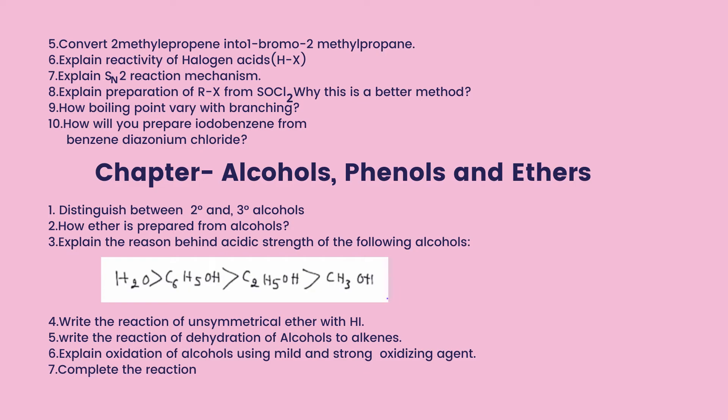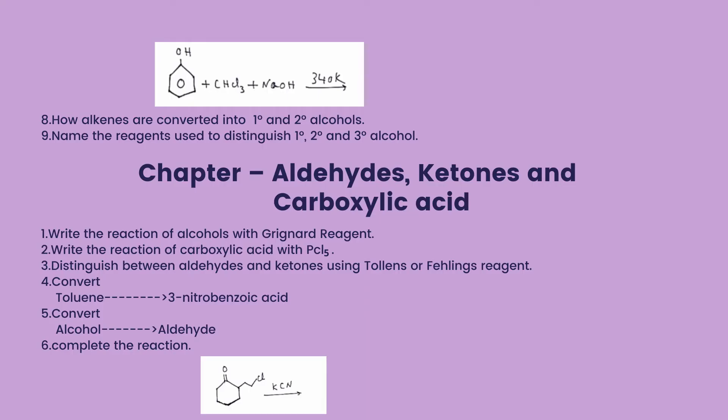Chapter: Alcohols, Phenols, and Ethers. Distinguish between secondary and tertiary alcohol. How is ether prepared from alcohol? Explain the reasons behind the acidic strength of various alcohols. Write the reaction of an unsymmetrical ether with hydrogen iodide. Write the reaction for the dehydration of alcohol to alkenes. Explain the oxidation of alcohol using mild and strong oxidizing agents. How are alkenes converted into primary and secondary alcohols? Name the reagent used to distinguish primary, secondary, and tertiary alcohol.